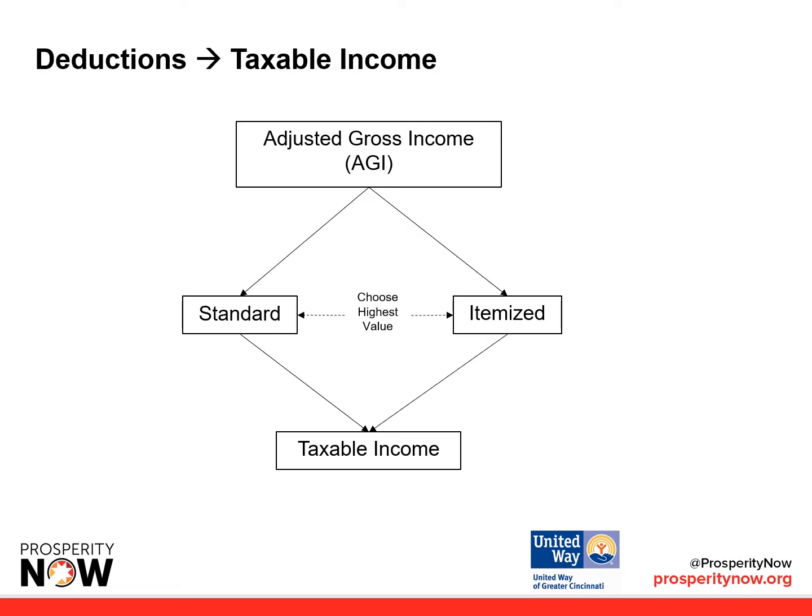Use the one with the higher value to obtain the lowest taxable income value. Look at the AGI: you choose the highest of either the standard or the itemized deduction, and then that converts into taxable income.